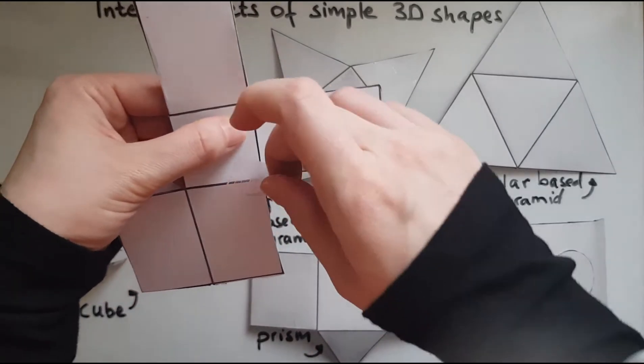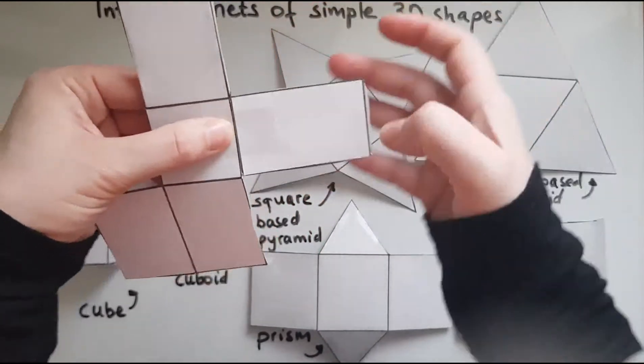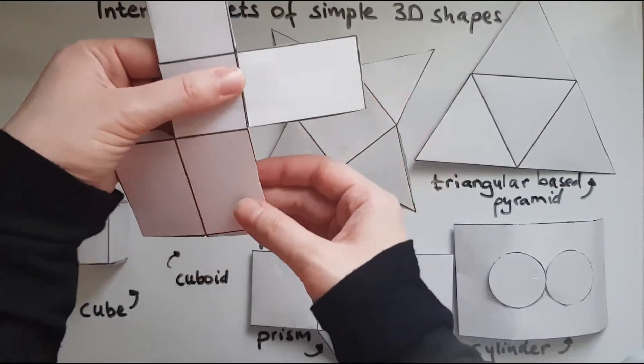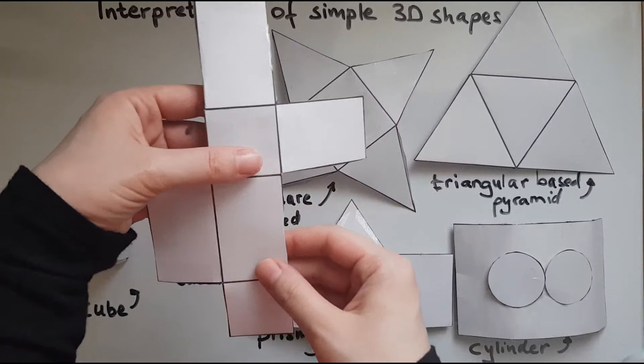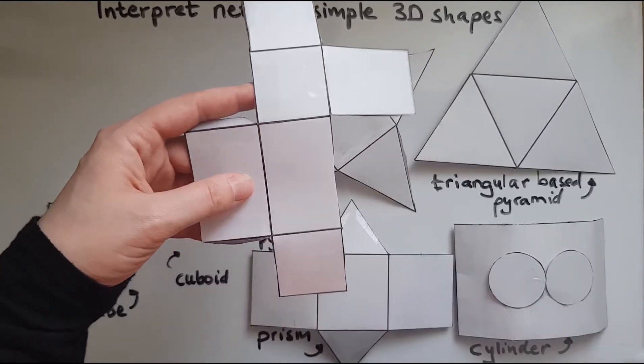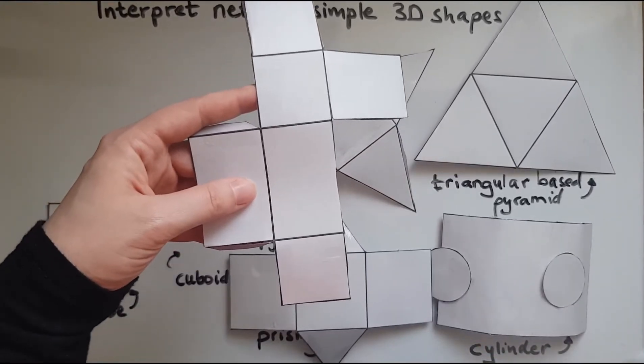And that could be stuck here or here. So that's changing the shape of the net slightly. And this is a good thing because then we're prepared for all sorts of nets. So we can interpret them. We can identify them.